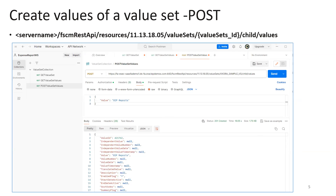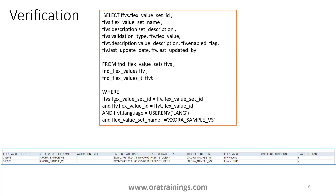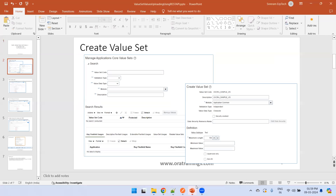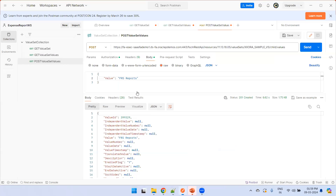To validate the value from a BIP report, you can use this particular query. You just need to join a couple of tables — the value set name is this one, and you can see the flex value column stores whatever value you mentioned while inserting. That is where it gets stored.